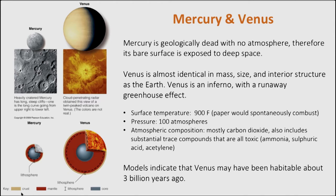Venus is the closest twin to the Earth and therefore interesting for that fact. It's very much a geological twin — identical in mass, size, and interior structure. Venus is highly geologically active and we believe it was subject to a runaway greenhouse effect that raised its surface temperature to its current 900 degrees Fahrenheit, a temperature at which lead would melt and paper would spontaneously combust. The pressure at the surface is 100 or more atmospheres, and the question arises how such a twin of the Earth could have such a very different evolutionary path.